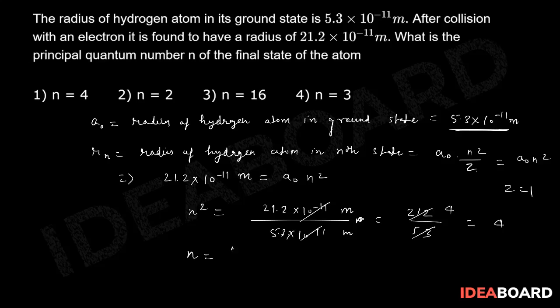So n is equal to root of 4, which gives us 2. So basically n is equal to 2, the second orbit. n = 2 is the right choice, option number 2.